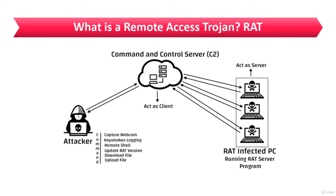The first type of Trojan is the Remote Access Trojan, which is very common these days. A remote access Trojan works like remote desktop access, where the hacker gains complete GUI access to the remote system.